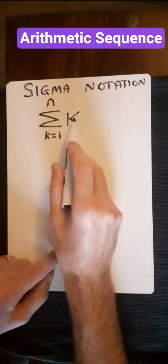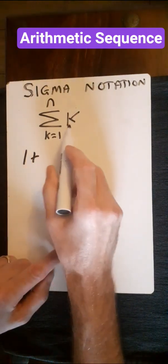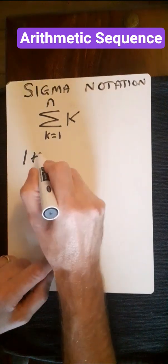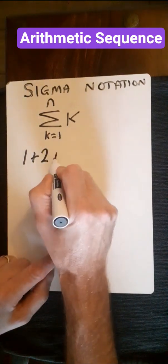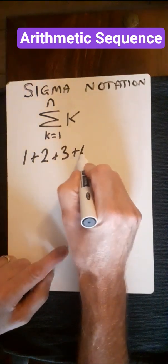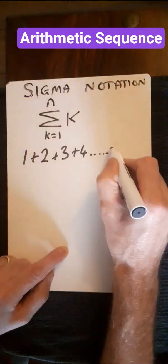So when k is 1, here we've just got 1. Next term, we've got k is 2, in which case we're adding 2. And k is 3, we're adding 3. And so on, all the way through the sequence until we get to n.